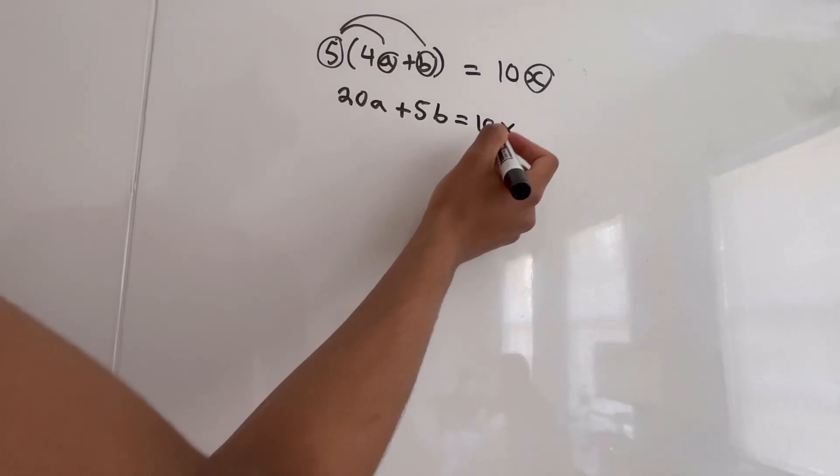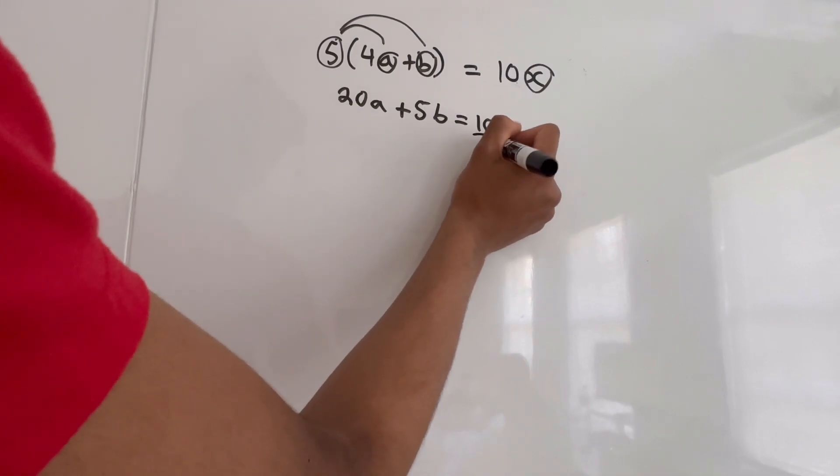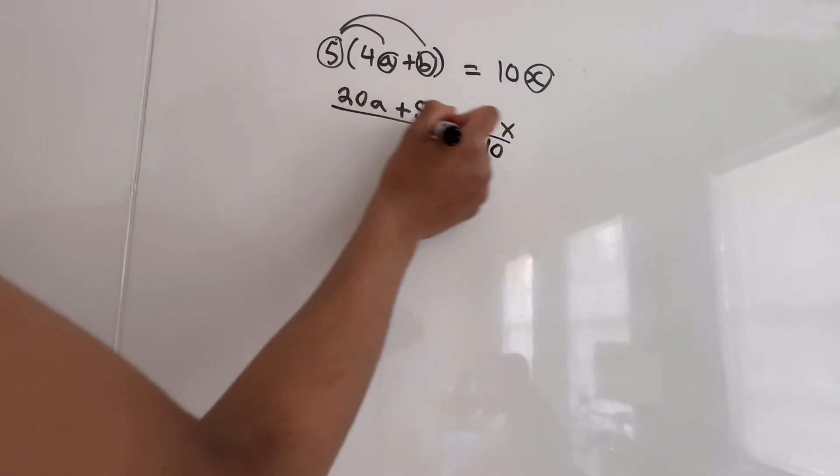Now, because we're isolating X, we're going to have to divide 10 on both sides to cancel out the 10 on this side. So when we divide 10 on this side, we're going to have to do it on the other side.